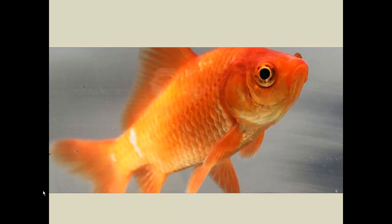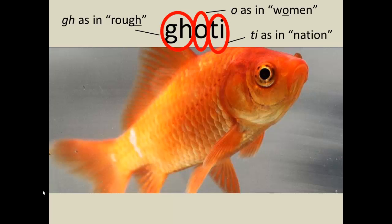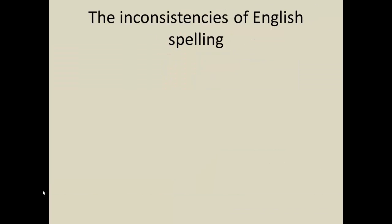So, here we have a fish. We all know how to spell the word fish in English, right? G-H-O-T-I. Okay, it looks a little odd, doesn't it? But on second thought, it makes perfect sense. The G-H is pronounced just like it is in the word rough. The O is pronounced as it is in the word women. And the T-I is pronounced just as it is in the word nation. This example shows the inconsistencies that we find in English spelling, and there are many more.